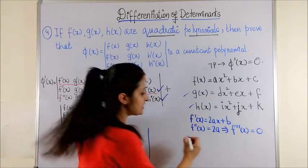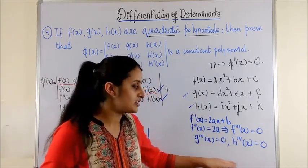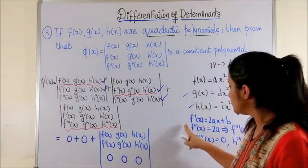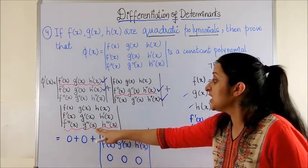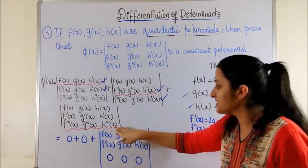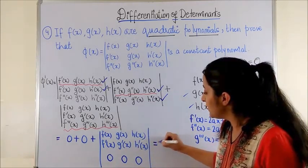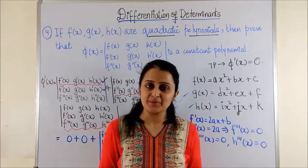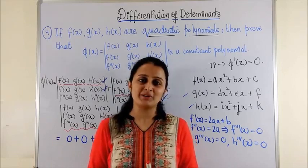Similarly, when you check out for g(x) and h(x), you would again be able to say that g'''(x) and h'''(x) are zero. If I substitute the value only for f'''(x), g'''(x), and h'''(x) are zero, zero, zero, the determinant is bound to give us a zero. So if φ'(x) is equal to zero, then φ(x) is a constant polynomial.